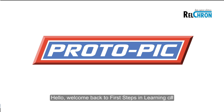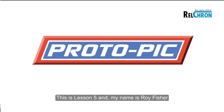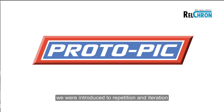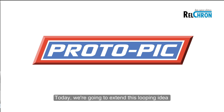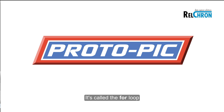Hello, welcome back to First Steps in Learning C-Sharp, brought to you by Protopic and Relcron Systems. This is Lesson 5, and my name is Roy Fischer. In the last lesson, we were introduced to repetition and iteration by using the for-each statement or construct. Today we're going to extend this looping idea and move on to a very powerful construct, which is heavily used in programming, and in particular C-Sharp. It's called the for-loop.